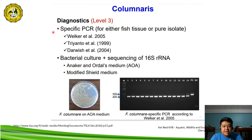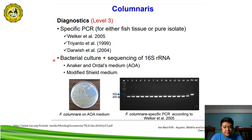Level 3 diagnostics include specific PCR for either tissue or pure isolate of the bacteria. We also have bacterial culture plus sequencing of the 16S rRNA. This diagram refers to the bacterial isolation of Flavobacterium columnare, along with specific PCR for Flavobacterium columnare.